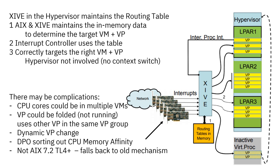In that case, XIVE uses another virtual processor in the same virtual processor group. If we look at LPAR 2, it has four virtual processors — maybe two of them are switched off. If it can't find those running, it will hand the interrupt to another virtual processor in the same LPAR. It will have to be paged into cache, but at least the interrupt will be handled quickly. We might also be doing dynamic virtual processor changes — making an LPAR a lot bigger or smaller — so the number of virtual processors is changing on the fly as well.